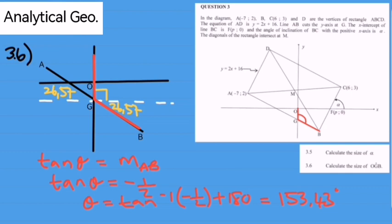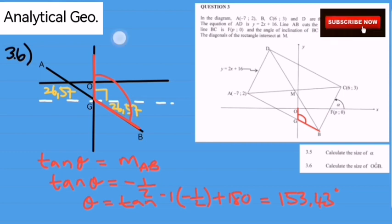Now, if you add that angle to the 90 degrees, angle OGB is 116.57 degrees.